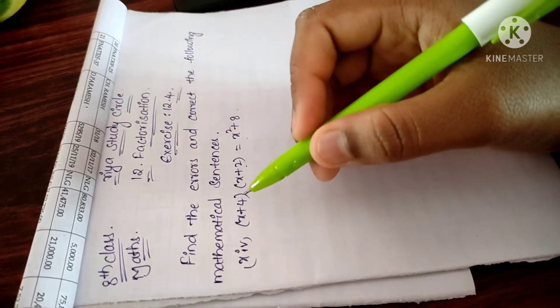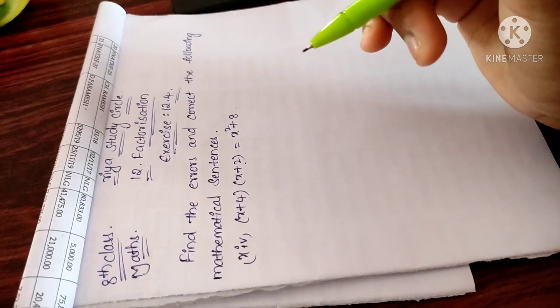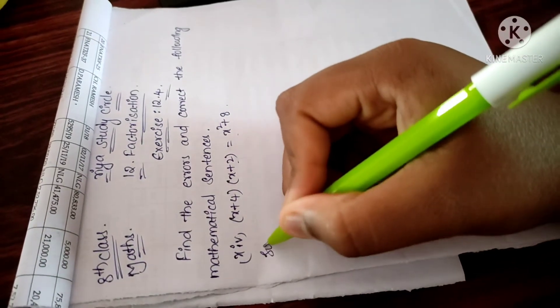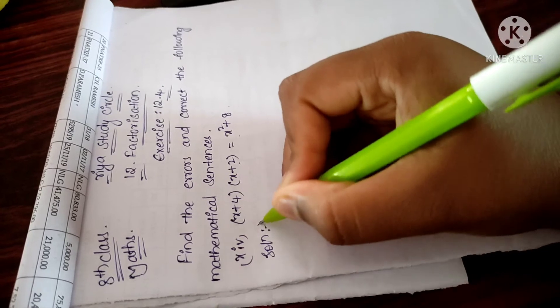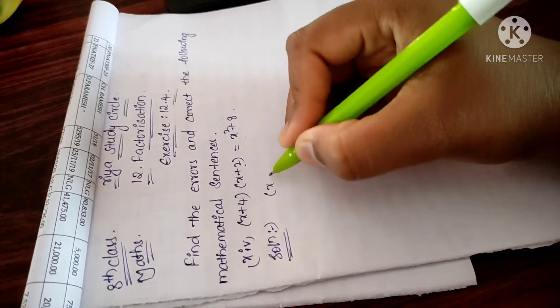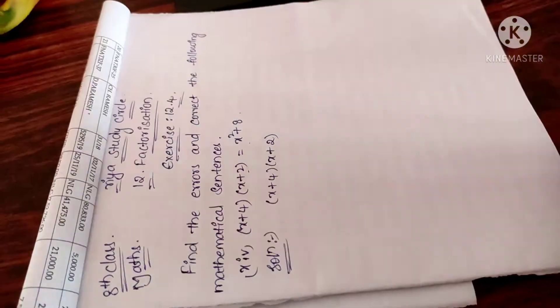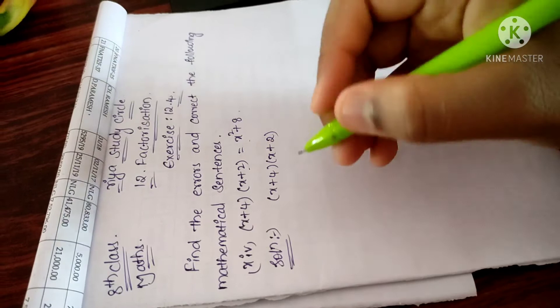So, 14th problem is x plus 4 into x plus 2 equal to x square plus 8. Solution for this problem is x plus 4 into x plus 2. So we have to solve this problem.